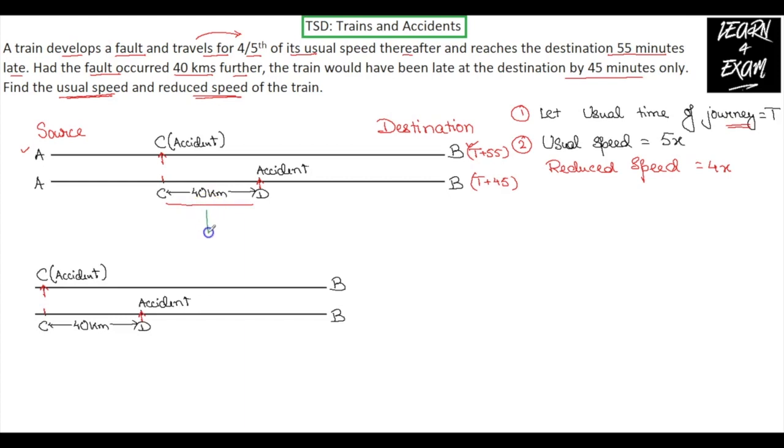Now, let us not consider the first diagram and move to the second diagram because the train travels with the same speed and takes the same time to cover from A to C in both the cases. Now, in the second diagram, what we need to understand is, from C to D, in the second case, the train speed is equal to 5x and after D, the train speed becomes 4x. However, in the first case, throughout the entire journey, the train's speed is equal to 4x.